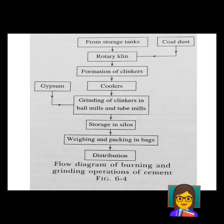Since clinker production occurs at a very high temperature, the material is sent to coolers. After cooling, it is sent to ball mills or tube mills where it is ground again and an additive known as gypsum is added to give it strength and durability. After the final product — cement — is obtained, it is sent to storage in silos, then weighed, packed in bags, and distributed.